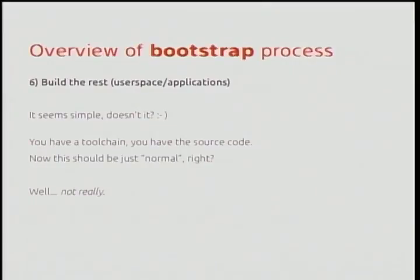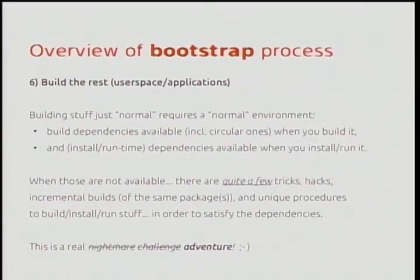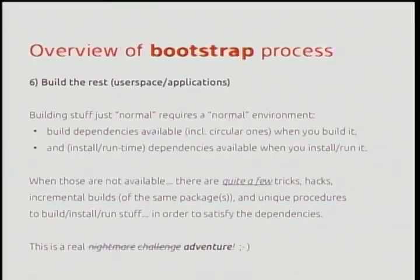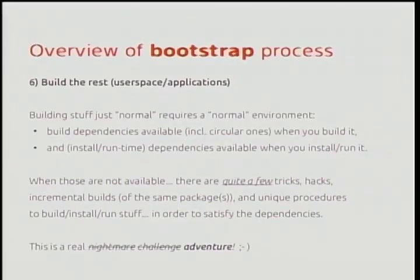Now let's build the rest. It should be simple, doesn't it? Because you have the toolchain and the source code. You should just go build, right? Well, not really. Building stuff the normal way requires you to have a normal environment with all the build dependencies available — and you don't always have that in your new architecture. When you're going to build, you have to have some packages installed. Those are build dependencies. And when you install some packages, they might require other packages as well — install-time dependencies. When those are not available, here's where the fun part comes. You can use lots of tricks — some are generic, some very particular to specific packages. It is a real nightmare at first, but once you get the deal of it, it's challenging. Once you get past that and have finished work, you can look at it as an adventure.